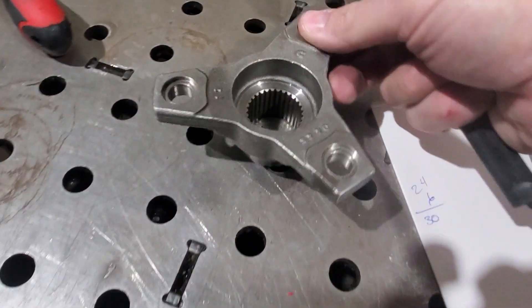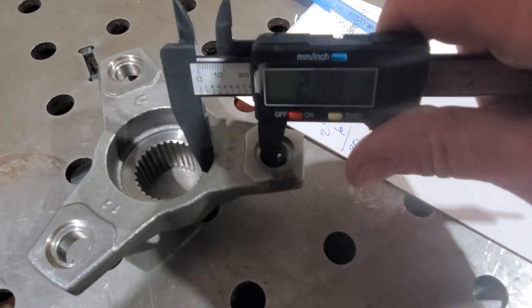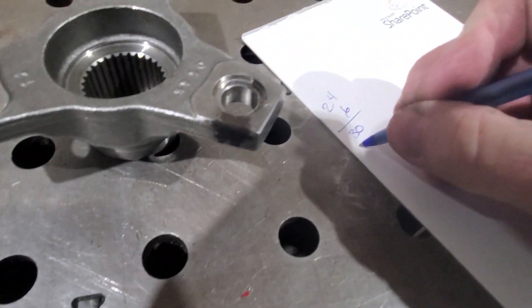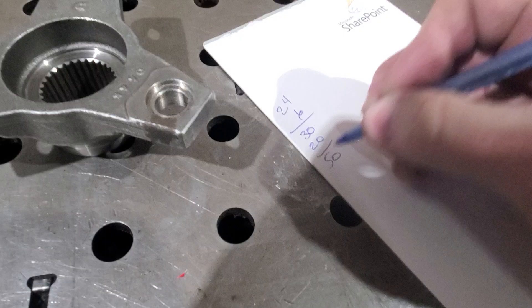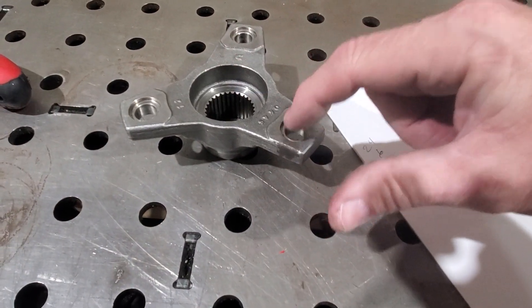And then if we look at the actual distance between the holes, we have 20. All right, so in total we have a 50 millimeter spread from the center of this hole to the center of this hole.